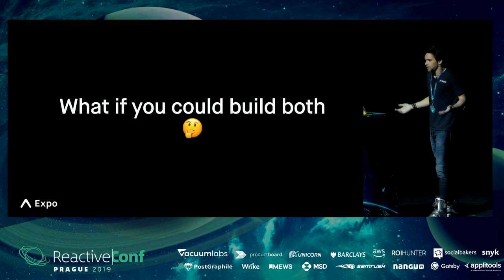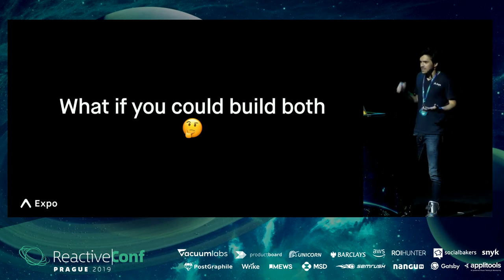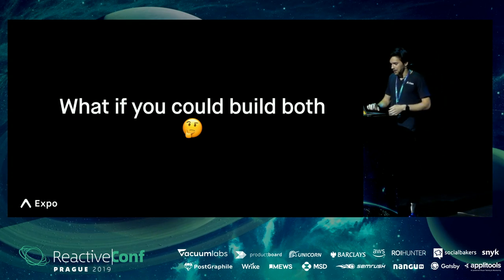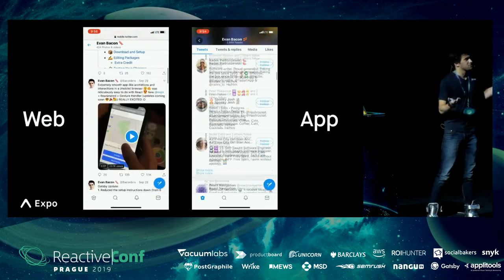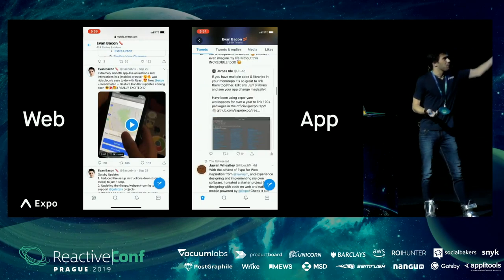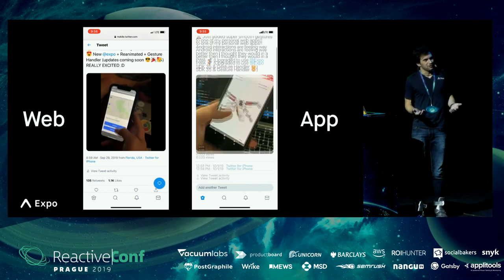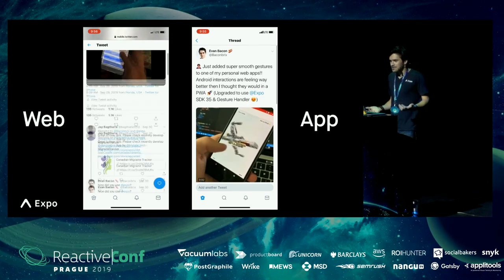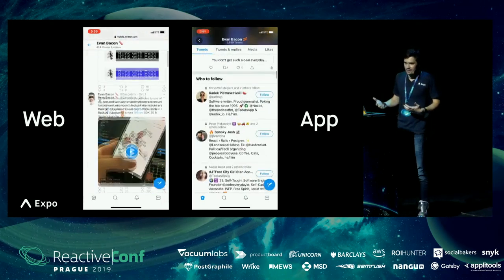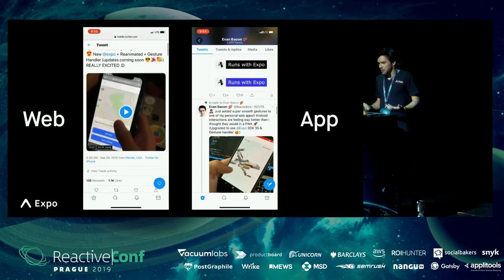What if you could build both? A lot of big companies — Facebook, Twitter, Instagram, YouTube — what would that look like? The answer is basically an identical product. This is Twitter. We have the web version and the native app version, and they look almost identical across everything. There are a lot of great reasons for this. You don't want to lock your user into the platform — you just want to lock them into your service.